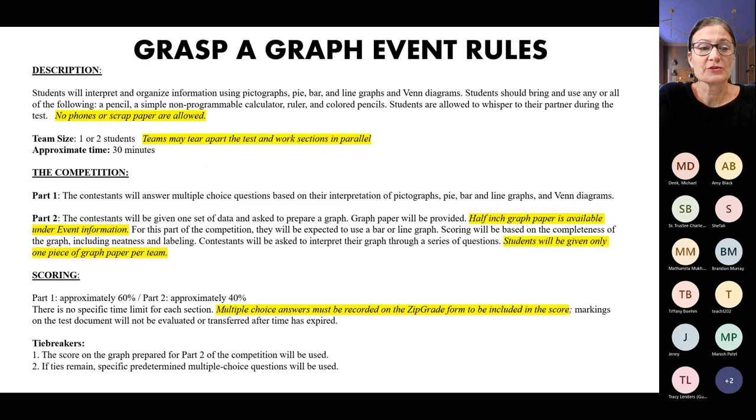Here we have up the rules, so you should already have a copy of the rules as part of setting up your team. They are, of course, on the website as well, but let's go over them in case there's any questions. The event itself challenges students to interpret and organize information that comes from pictographs, pie graphs, bar and line graphs, and also Venn diagrams. So that's the scope of the graphs that we're expecting the students to be able to analyze.